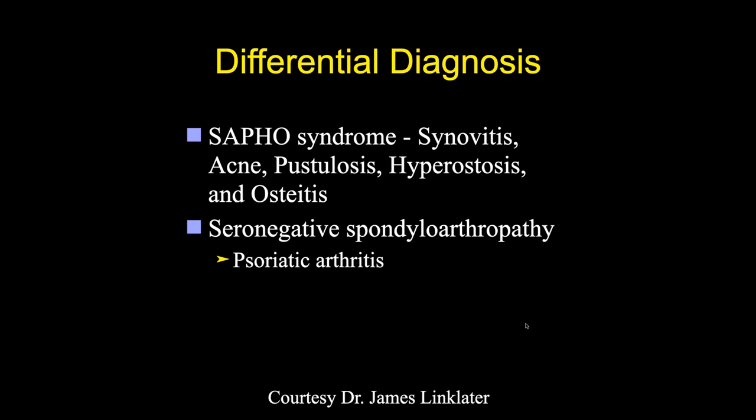The things to think about here are really psoriatic arthritis or the SAPHO syndrome — synovitis, acne, pustulosis, hyperostosis, and osteitis. We'll talk more about that when we get to inflammatory diseases later. You can have osteitis of the sternum and get chronic sternal pain from trauma, but if there's no trauma you really have to look and make sure they don't have a systemic inflammatory disease. These are the two most commonly associated with inflammatory changes of the sternum.